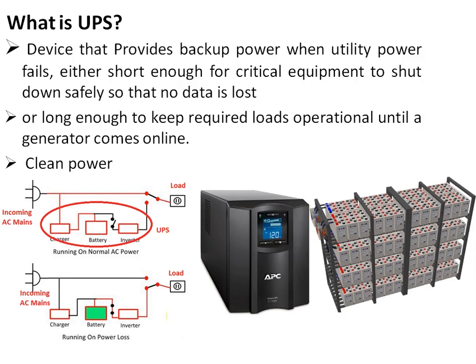In addition to backup power, the UPS is also required for providing clean power which is free of any voltage transients such as sags or brownouts. As seen in the right side figure, an important part of the UPS is the battery, which is used for storing energy in case of any power failure. The UPS detects the failure and converts the DC energy stored in the battery to AC and supplies it to the load.